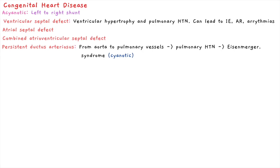You can also have a persistent ductus arteriosus. Normally the ductus arteriosus connects the aorta to the pulmonary vessels but this normally closes. If it remains open, blood moves from the high-pressure aorta on the left to the low-pressure pulmonary vessels on the right. Over time, the increased blood in the pulmonary vessels can lead to pulmonary hypertension, and this can lead to Eisenmenger syndrome where the blood goes the other way, resulting in cyanotic heart disease.